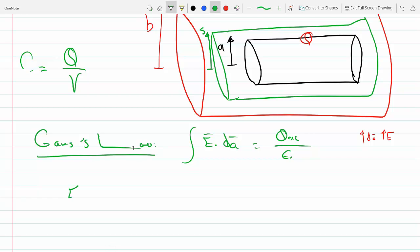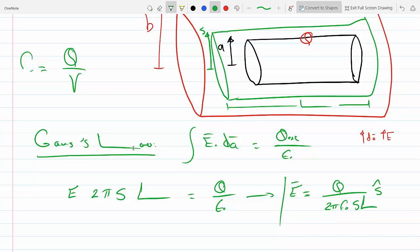And if I do that, the area of that Gaussian surface is 2 pi S, the radius, times the length, if I consider this to be L. Or, you know, as long as D. Okay, and this is equal Q over epsilon, and then I will get E to equal Q over 2 pi epsilon SL. And that is in the S direction. So this is my electric field.